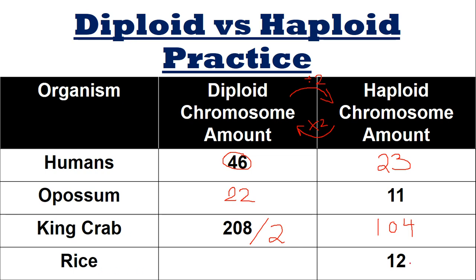Last one: rice. Plants are still organisms — they still have chromosomes. Rice has 12 chromosomes in a haploid. We need to get to diploid, so we multiply by two. 12 times 2 is 24.